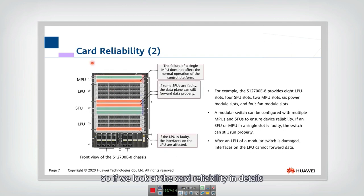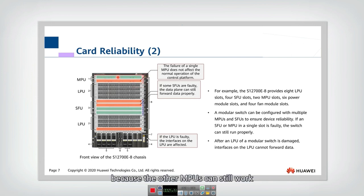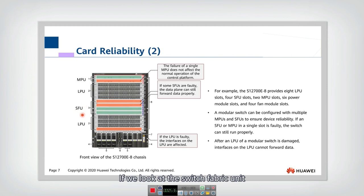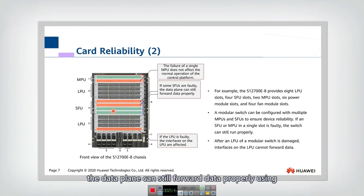Looking at card reliability in detail: with multiple MPUs, if one MPU has a failure, it doesn't affect the normal operation of the control platform, because the other MPUs can still work to handle control and management. Similarly for the switch fabric unit — if some switch fabric units fail, the data plane can still forward data properly using the other still-working SFUs.